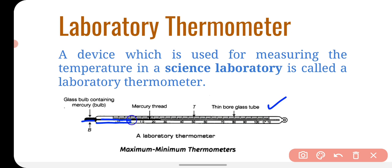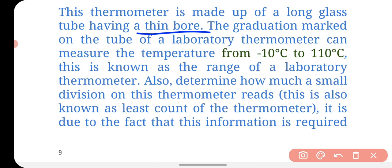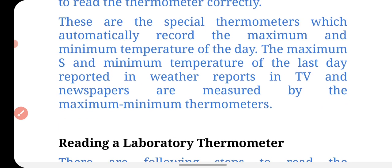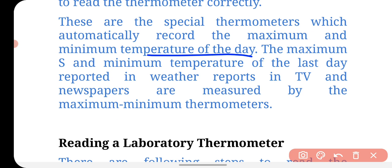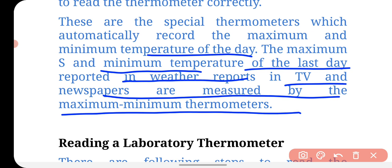Mercury flows and expands in the tube. The marking range of a laboratory thermometer is from minus 10 degrees Celsius to 110 degrees Celsius. There are also special maximum and minimum thermometers that automatically record the maximum and minimum temperature of the day — the temperatures reported in weather reports on TV and in newspapers are measured by such thermometers.